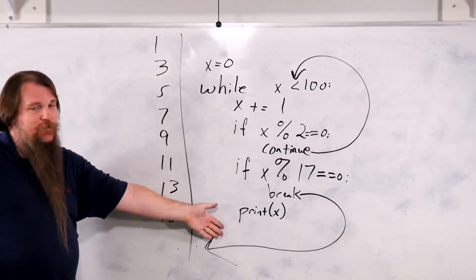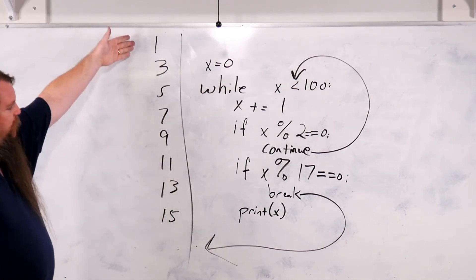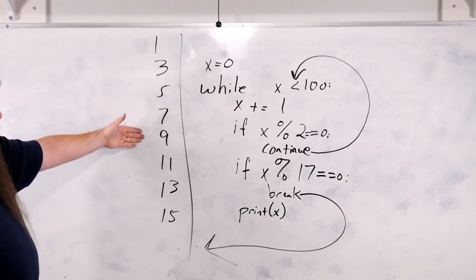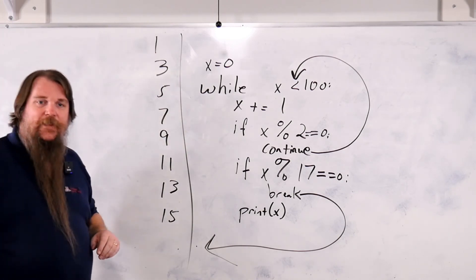So this snippet of code will print 1, 3, 5, 7, 9, 11, 13, 15, and then end.